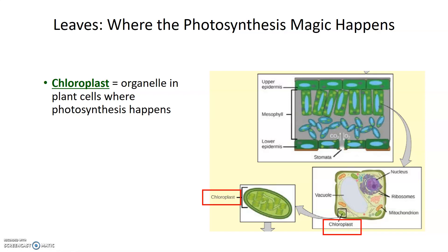A chloroplast is the organelle in plant cells where photosynthesis happens. If we took a chloroplast and zoomed in, you'd see it has two membranes — an outer and an inner membrane — and it contains these stacks called thylakoids, which is where the photosynthesis reactions take place.